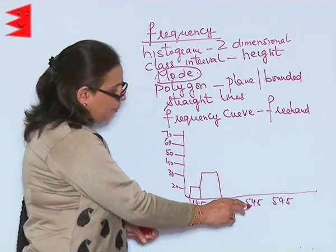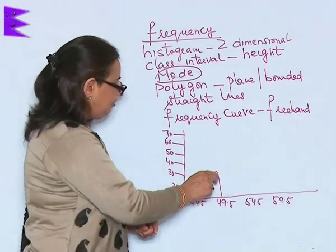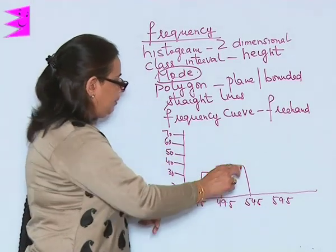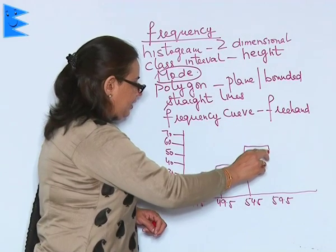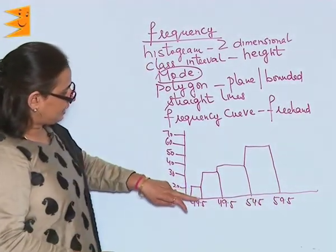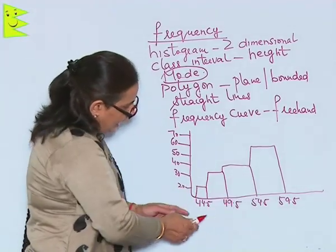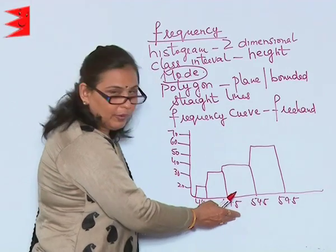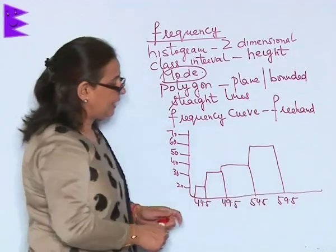At 54.5, say 50 people earn this amount. 60 people, or 70 people, earn up to 59.5. This becomes a histogram. There is no space in between, and the class intervals are equal: 44.5, 49.5, 54.5, 59.5.